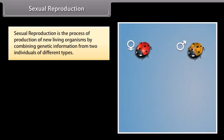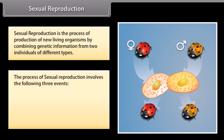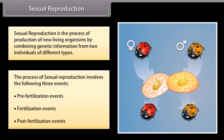Sexual reproduction is the process of production of new living organisms by combining genetic information from two individuals of different types. The process of sexual reproduction involves three events: pre-fertilization events, fertilization events, and post-fertilization events.